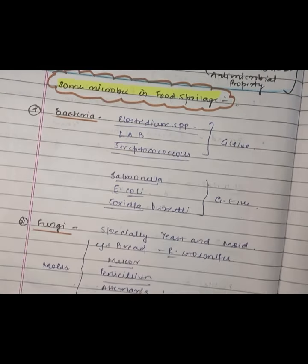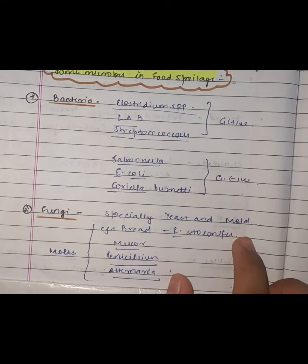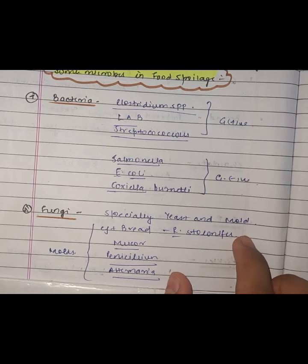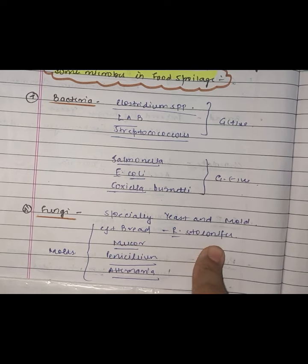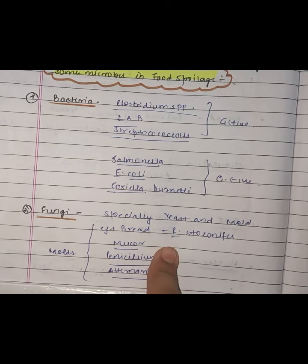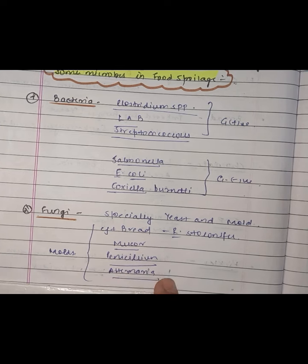Fungi are also responsible for spoilage. Yeasts and molds cause spoilage — for example, bread spoils due to Rhizopus stolonifer; other molds like Mucor, Penicillium, and Alternaria are also responsible for food spoilage. Yeasts like Saccharomyces cerevisiae and Candida spoil maple syrup, pickles, jams, and soy sauce.